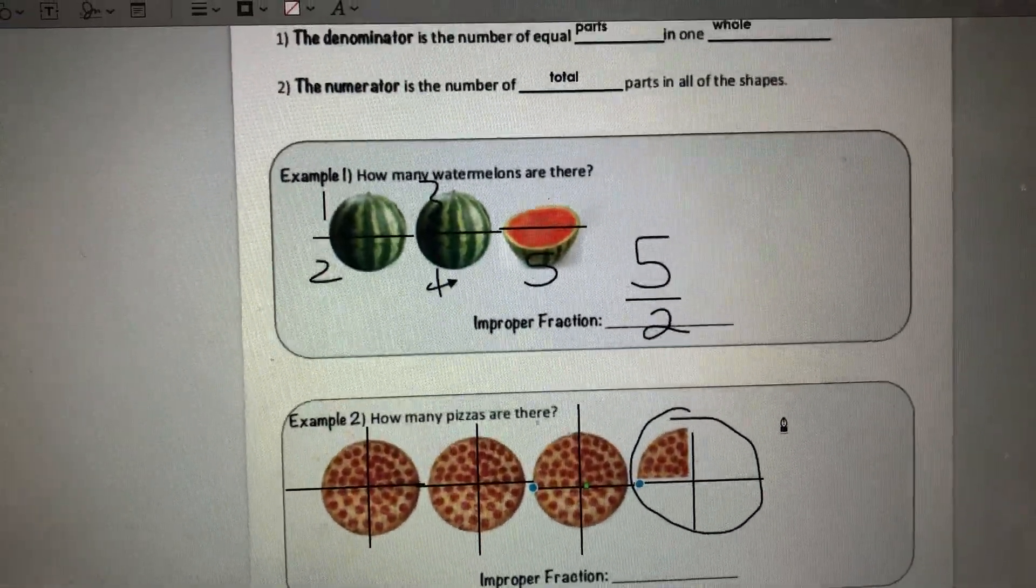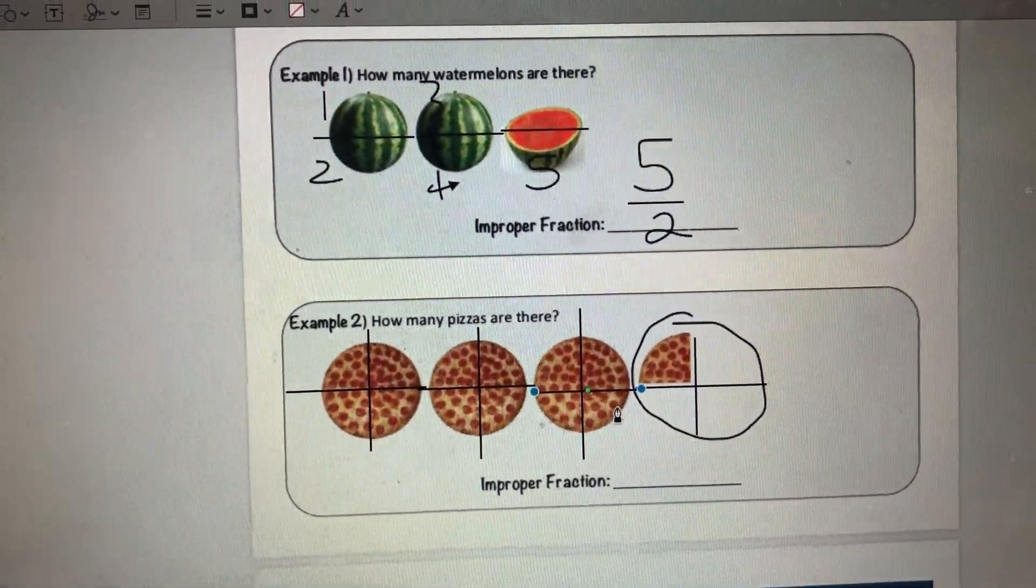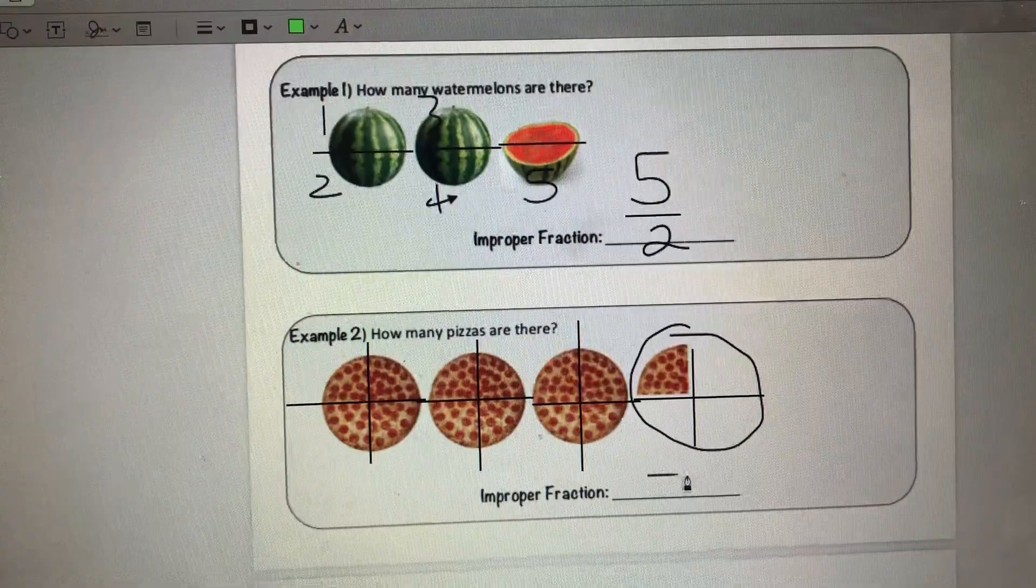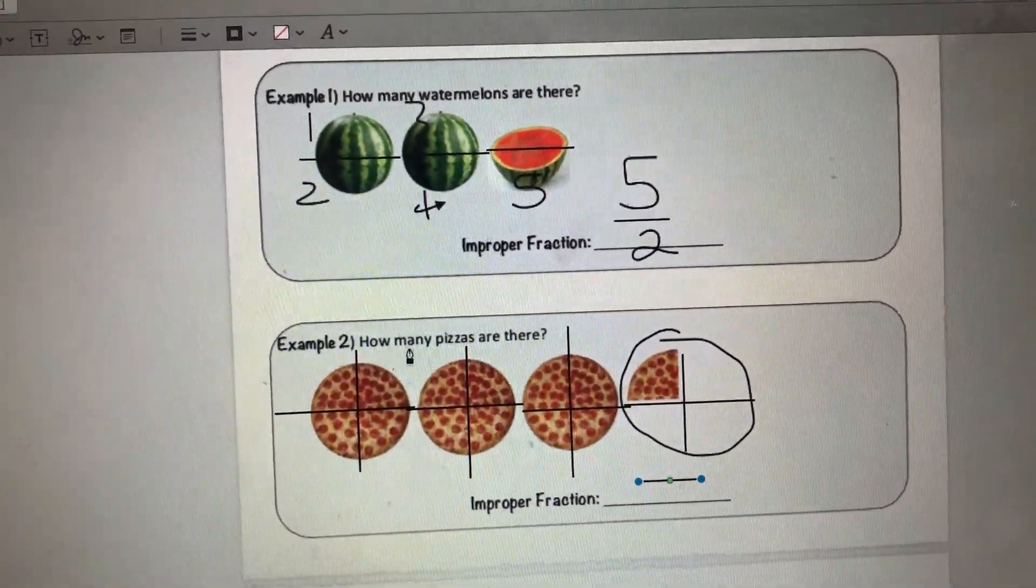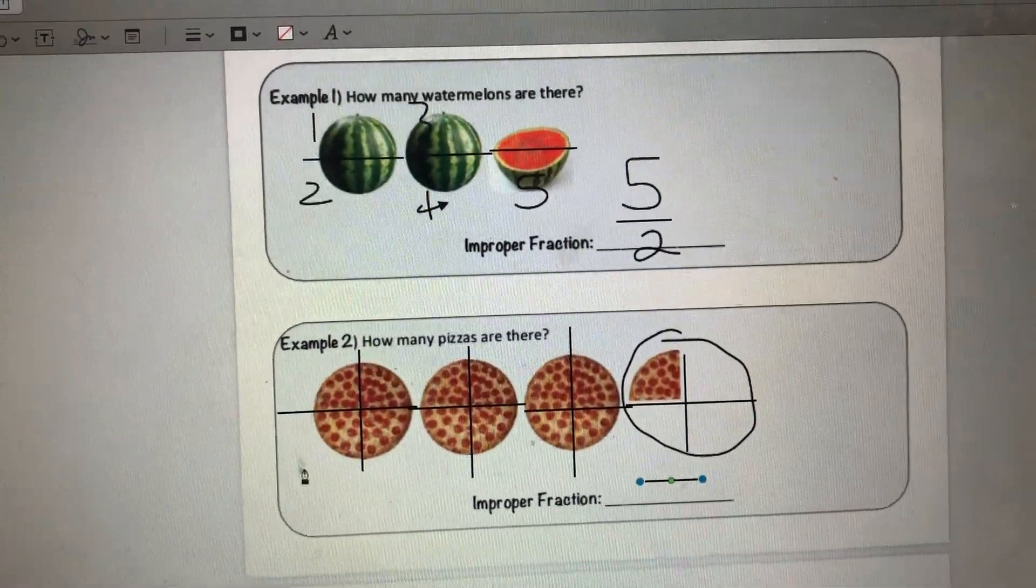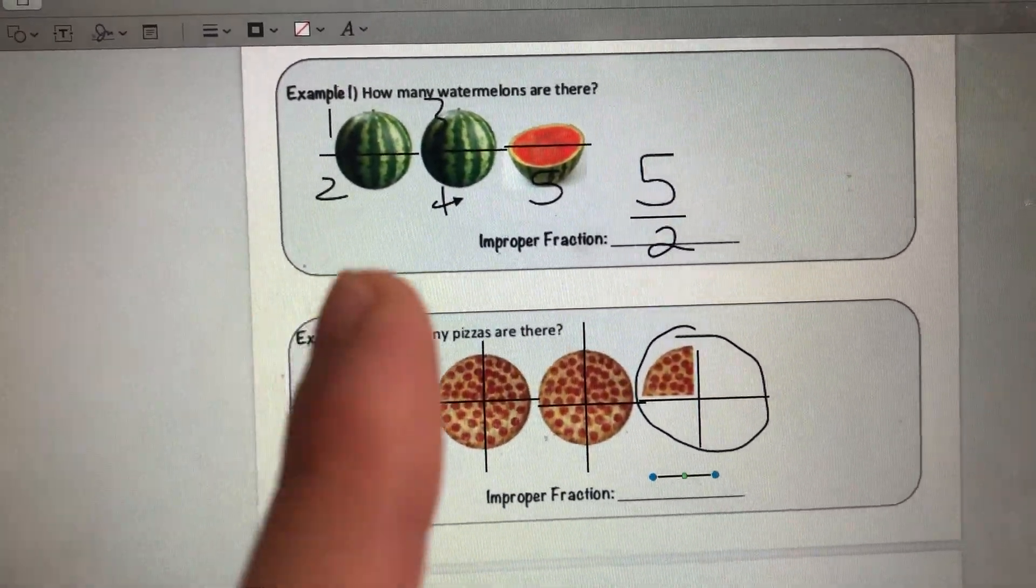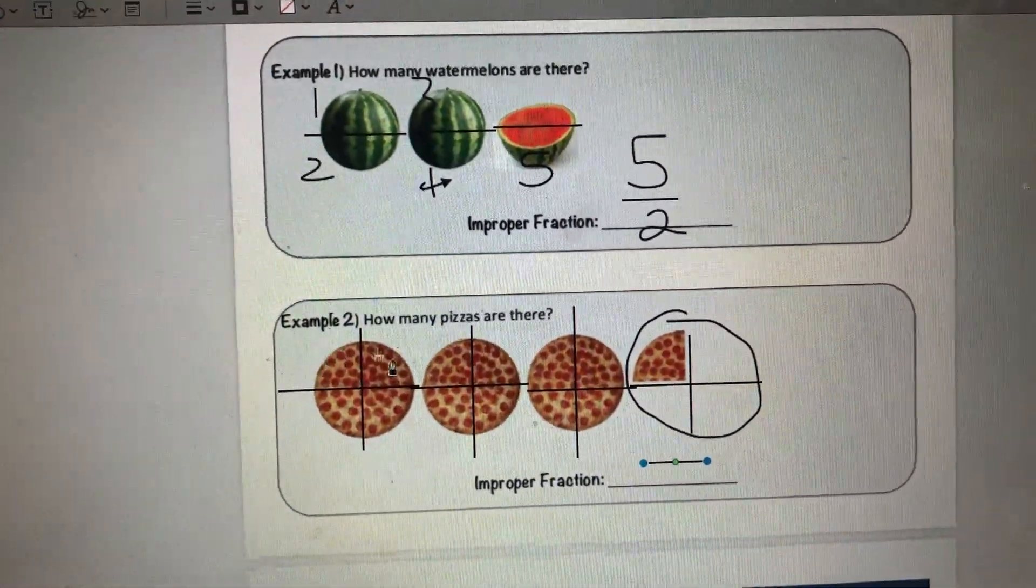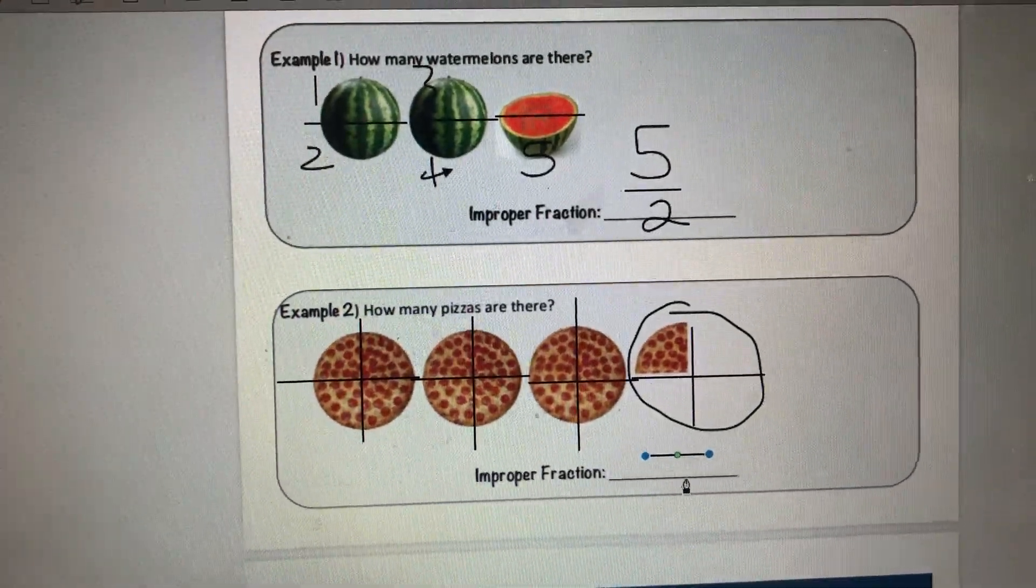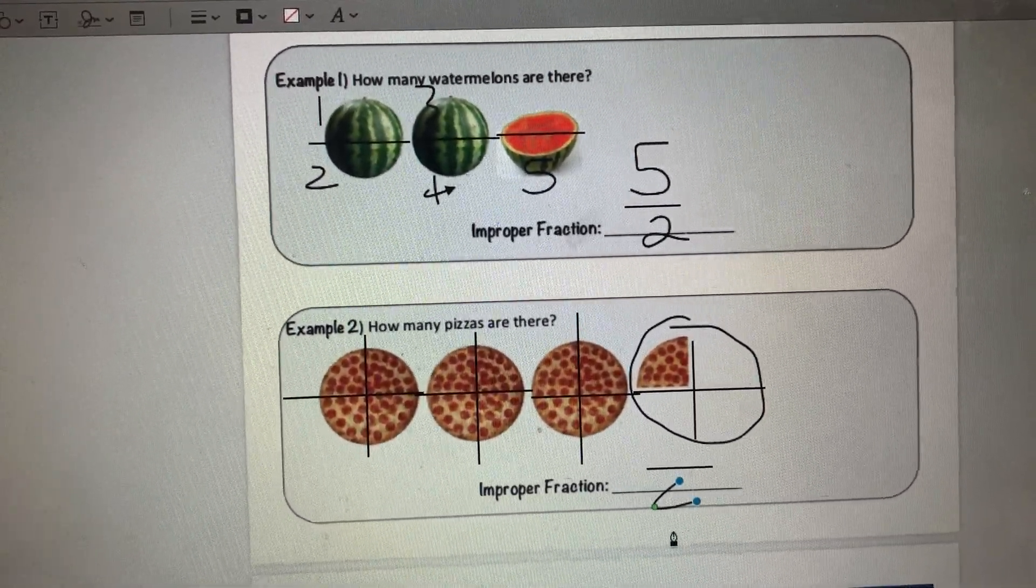So I see that each of these is divided into four total parts. I'm first going to find my denominator of my fraction, right? Which is, I'm just going to look at one whole. I'm going to look at just this one. How many total parts are there in just one whole? One, two, three, four. My denominator for my improper fraction is going to be four.